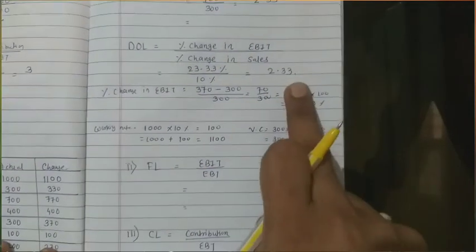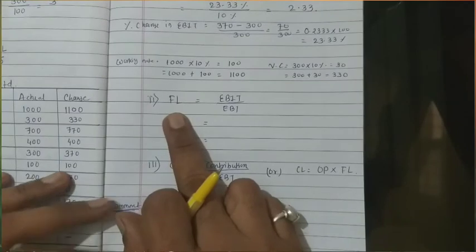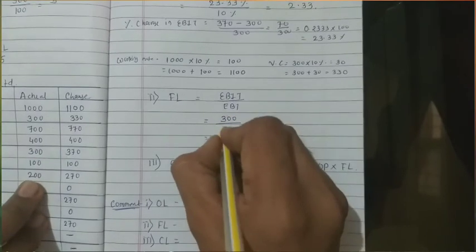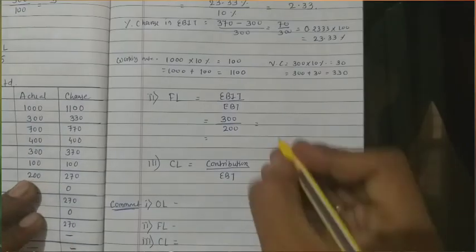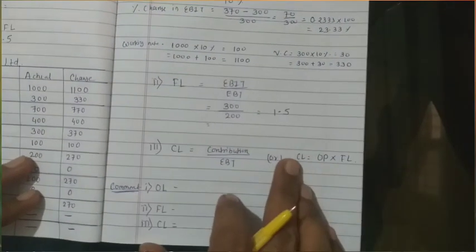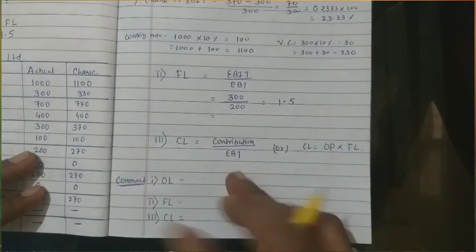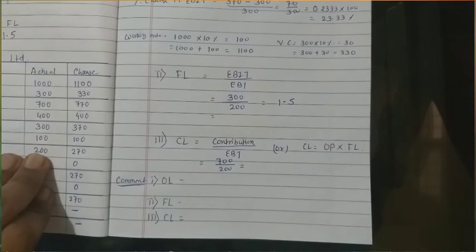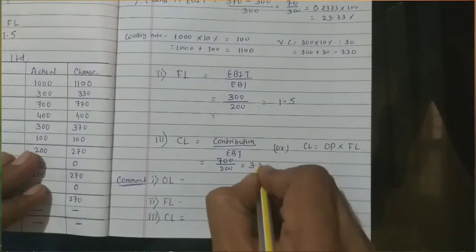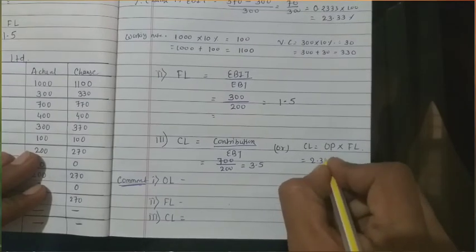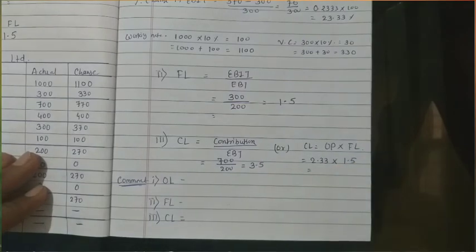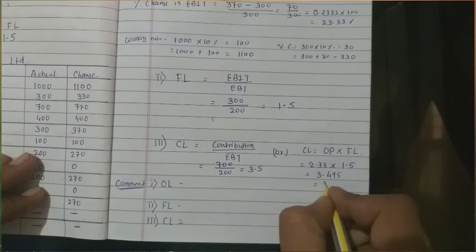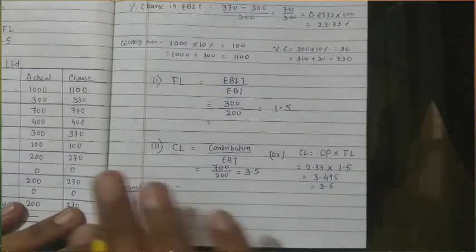Financial leverage for Q = EBIT ÷ EBT = 300 ÷ 200 = 1.5. Degree of financial leverage cannot be calculated — EPS information not given. Combined leverage = Contribution ÷ EBT = 700 ÷ 200 = 3.5. Alternatively, operating leverage × financial leverage = 2.33 × 1.5 = 3.495 ≈ 3.5. Our calculation is over.